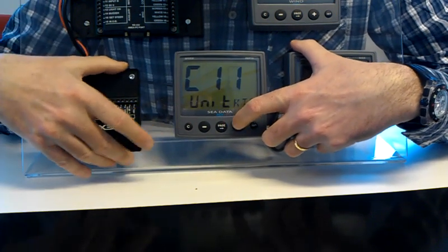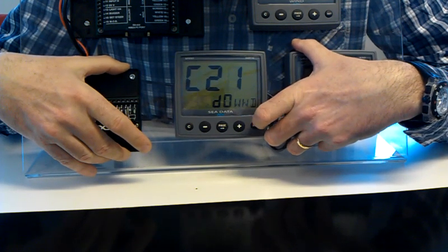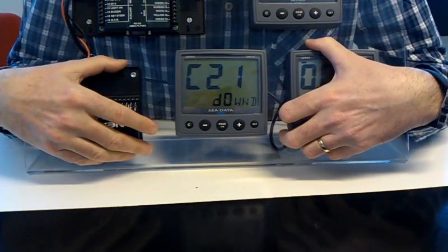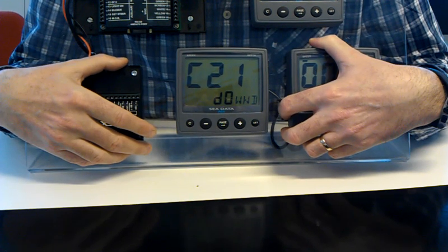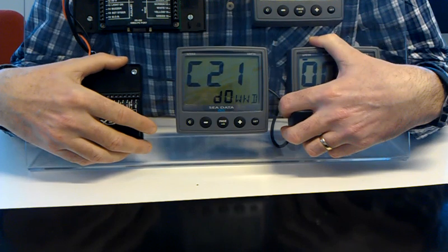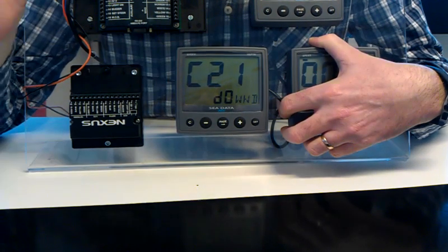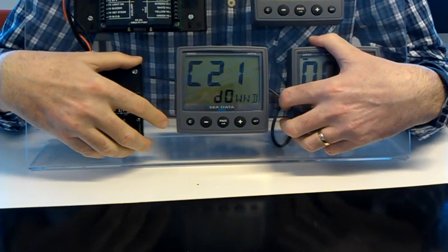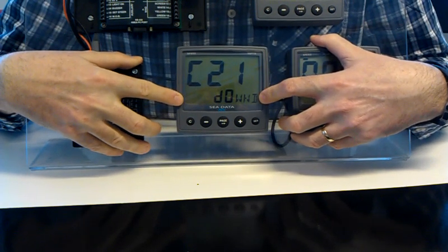Moving on to C21. This is the dampening of the wind. Now, dampening is quite simply the rate of information that is received at the instruments. Now, with wind information, that is affected by the mast being moved up and down by gusts. And, obviously, you want an average of all that to get a good, solid reading. So, we can increase the dampening of the wind.